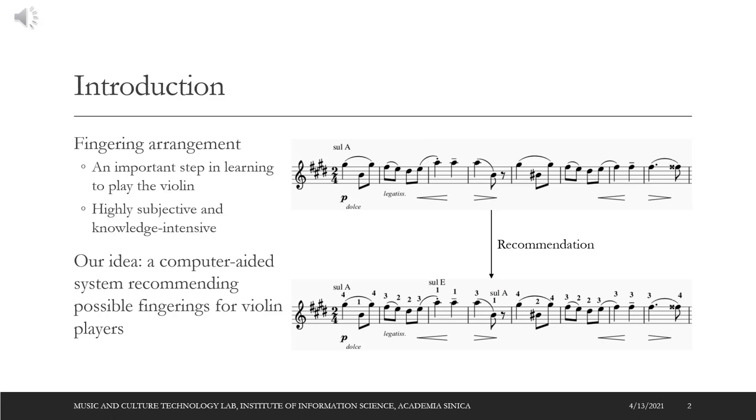This paper is about automatic fingering recommendation for playing violin. Organizing fingerings, or choosing which fingers to press on which positions and strings, is a crucial step for playing the violin. Proper fingering makes the hand movements comfortable and facilitates musical expressiveness. However, arranging fingering is not an intuitive task since it is a highly subjective and knowledge-intensive process. So, we consider a computer-aided system which provides possible fingerings for violin players.